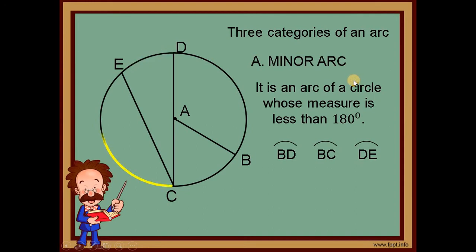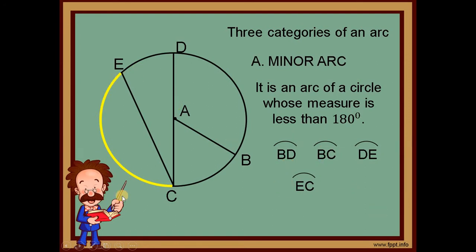And the last example of a minor arc is arc EC. Arc EC is a minor arc because it does not go past the halfway point.